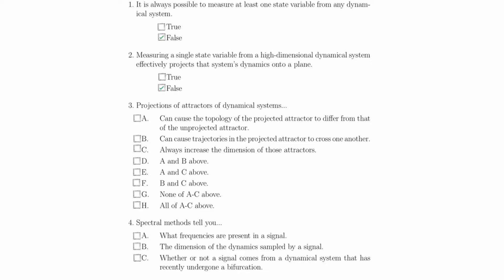For example, if you projected an attractor and caused a loop in the dynamics to cross, you could go from one hole to two holes.